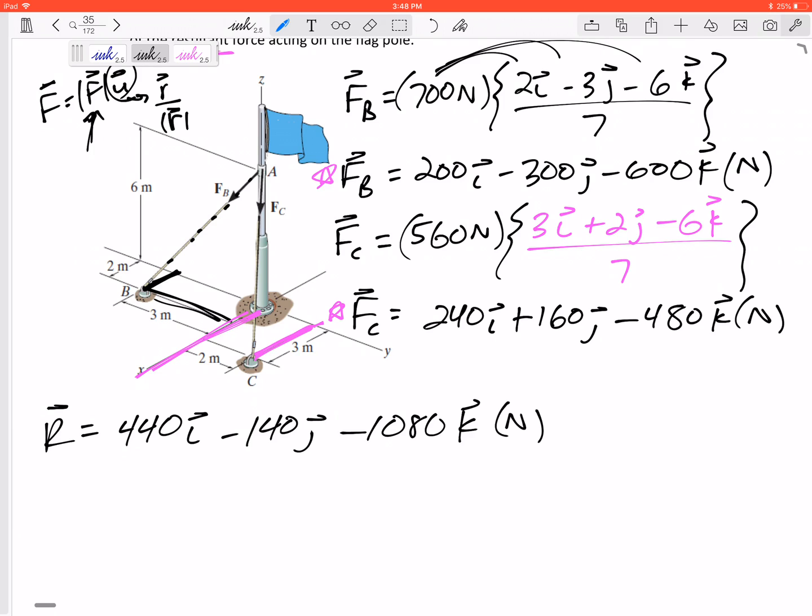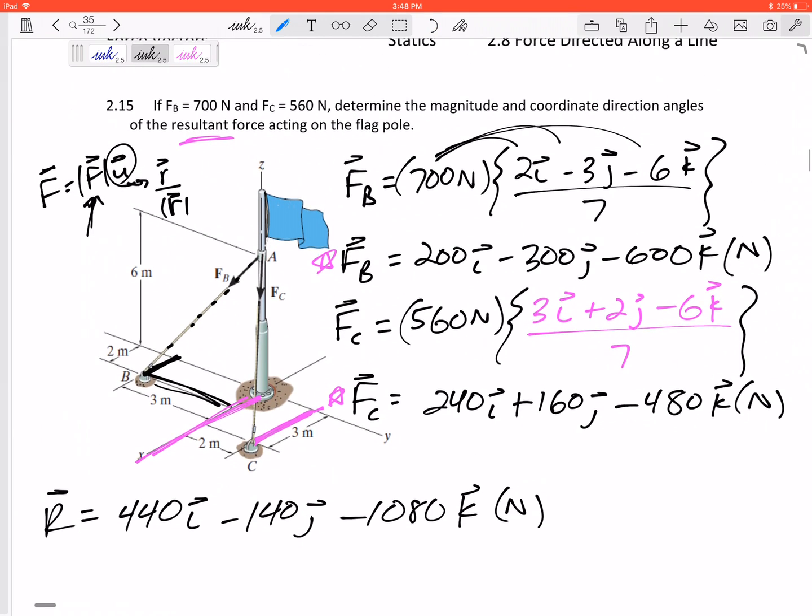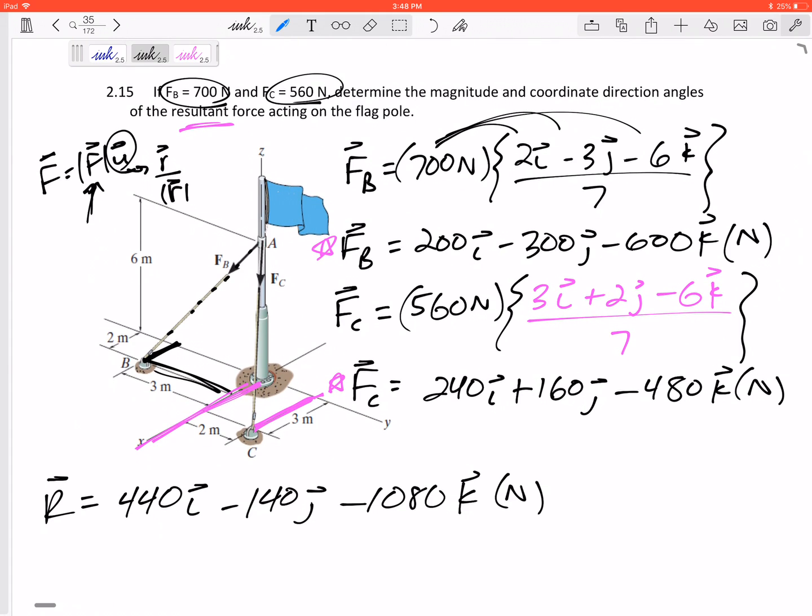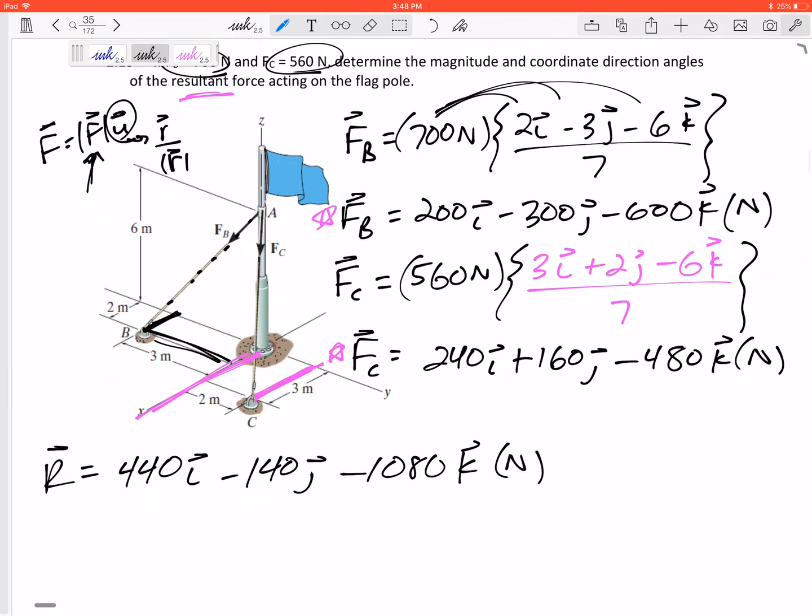So what's the magnitude of that? Notice that I was told these magnitudes, but I don't know the magnitude of the resultant. So I really need to do 440 squared, 140 squared, 1080 squared, take the square root. The magnitude would be 1175 Newtons. That is the magnitude of the resultant.